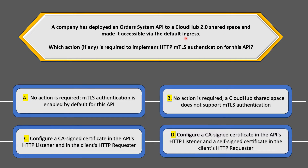The API is using the default ingress and the company wants to implement mutual TLS authentication for this API. The question is: what actions are required to achieve that?